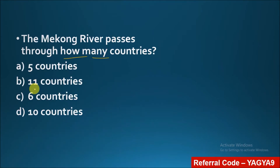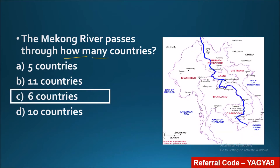Next question: the Mekong River passes through how many countries? The correct answer is six countries. As you can see in this plot, the Mekong River originates in Tibet, then comes to China. After China it comes to Myanmar and Laos. The Mekong also acts as a natural boundary between Laos and Thailand.